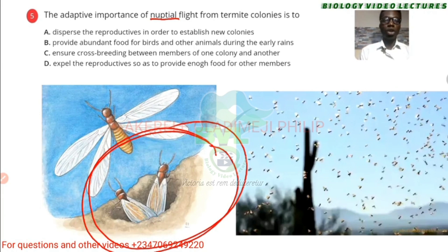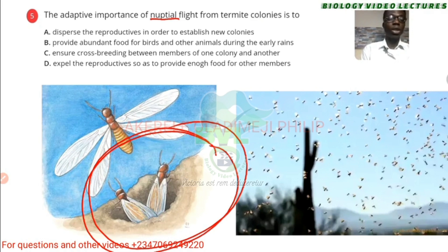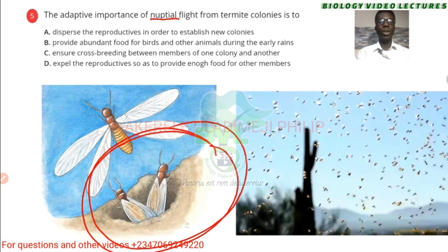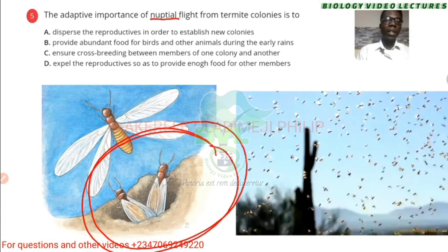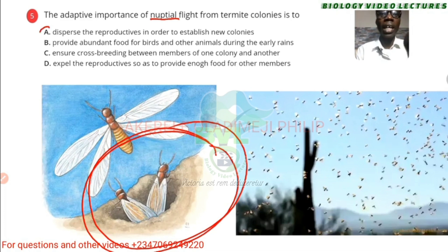So with that explanation, you should be able to know the answer. It says 'disperse reproductives in order to establish new colonies' — that makes sense. 'Grab food for birds and animals' — no. 'Ensure crossbreeding between members of the colony and another species' — no. This deals with establishing new colonies, so A is the answer.